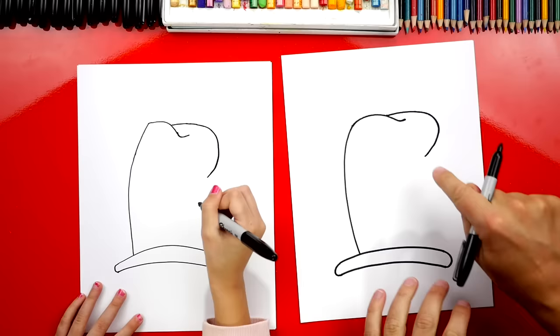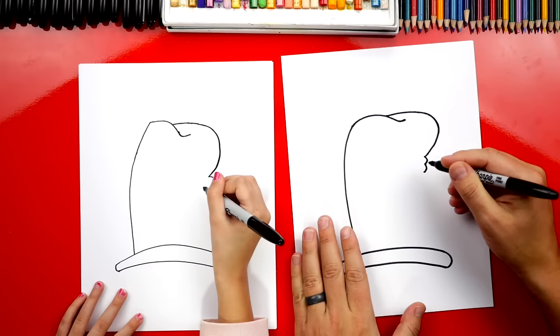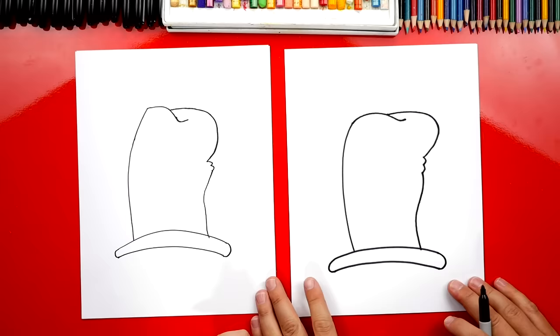Then right below this curve, we're going to draw two bumps because his hat's kind of old and wrinkly. Then we're going to draw an S curve that connects back down to the bottom of our hat. So we're going to curve one direction and then back the other direction. It's already starting to look like his hat, right?